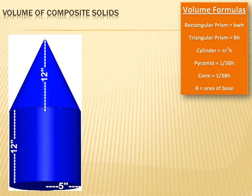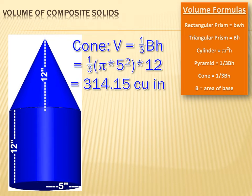The volume of a cone is one-third times the area of the base times the height. Now I need to just plug in the numbers I know. I know the one-third. The area of the base is pi r squared. The radius of the cone is the same as the radius of the cylinder, or five inches. And the height is 12 inches. So the volume of the cone ends up being 314.15 cubic inches.